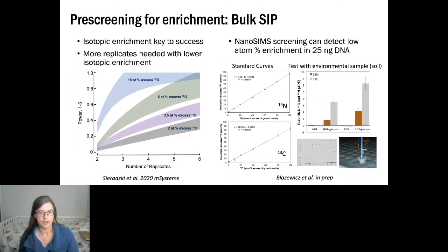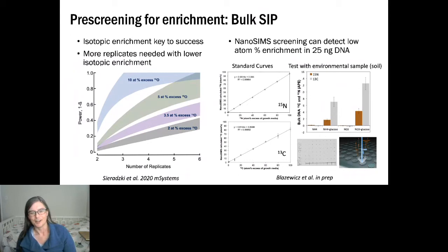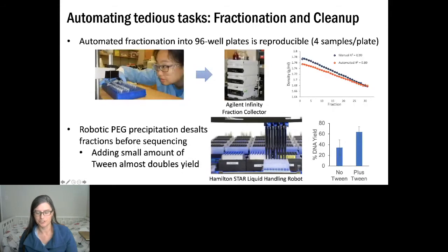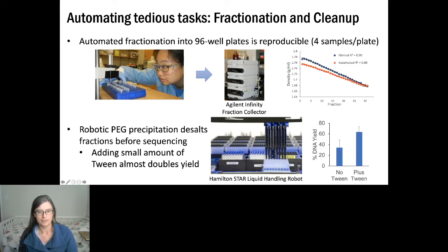The second part of this process is automating the actual fractionation. Originally you take the tube and drip fractions manually into collection tubes — super tedious. We used an Agilent Infinity fraction collector to automatically drop fractions into a 96-well plate. Typically four samples go into a plate, putting us in a high-throughput format where we can process multiple samples simultaneously. This automated process is very comparable to manual fractionation.